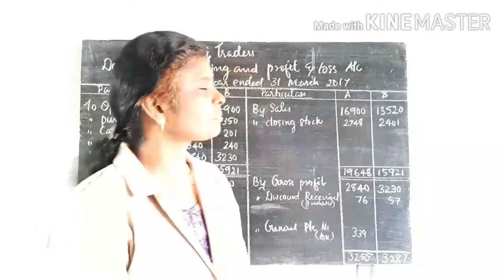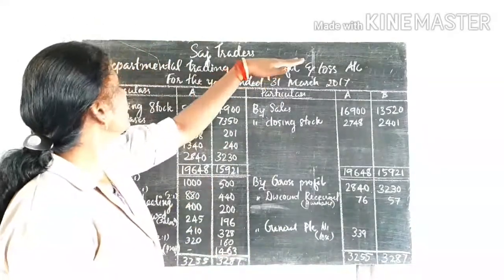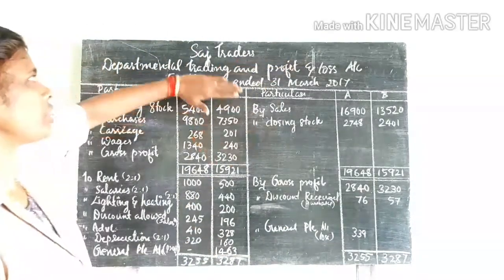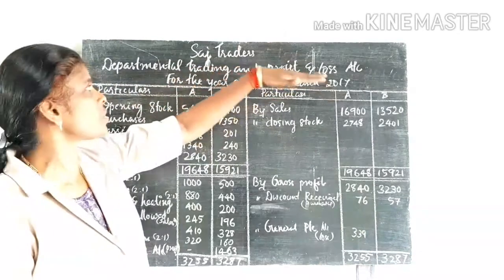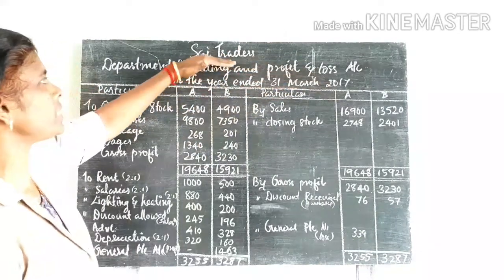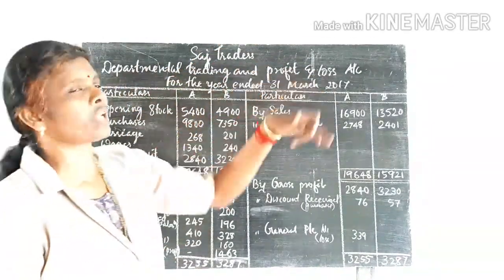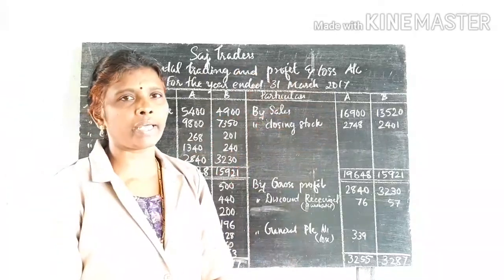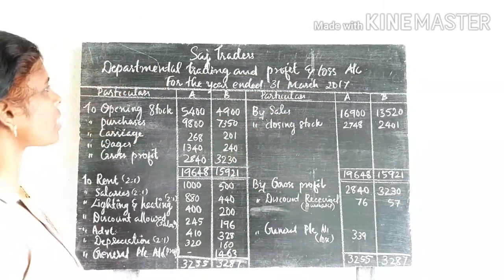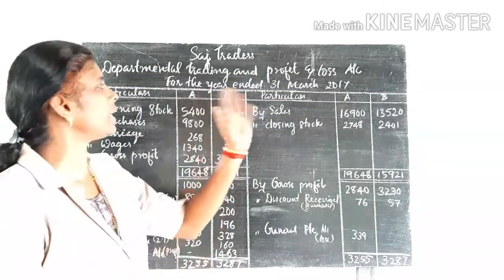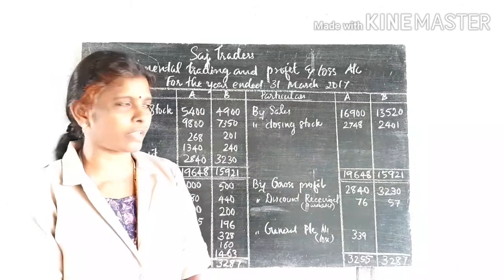Let's start. In the books of such traders, I will write the heading: Departmental Trading and Profit and Loss Account for the year ended 31st March 2017. On the debit side, we have particulars for Department A and Department B, and on the credit side likewise.